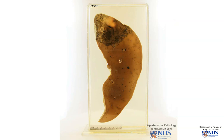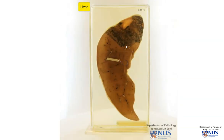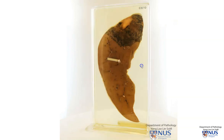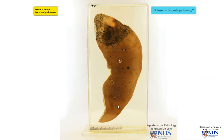Here is a specimen of a slice of the liver, and I'm just going to turn it around so we can have a good idea of the entire appearance. The pathology that we see here is clearly a discrete or localized lesion. The first question to ask whenever we're looking at a solid organ like the liver is: are we dealing with a diffuse process that affects the entire liver, or a discrete or localized lesion?